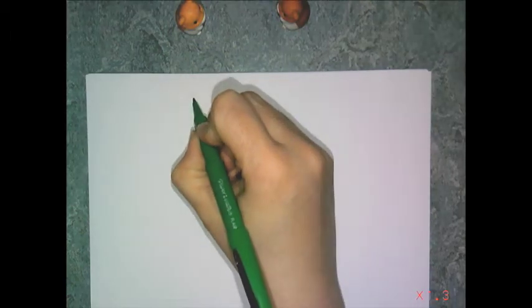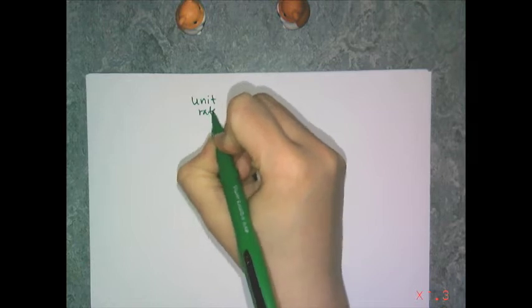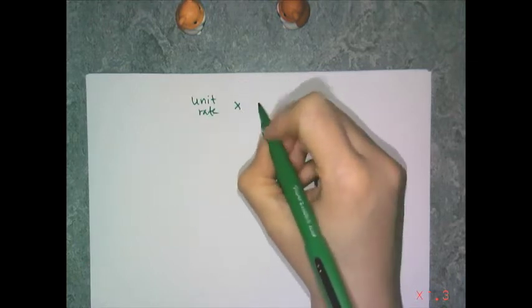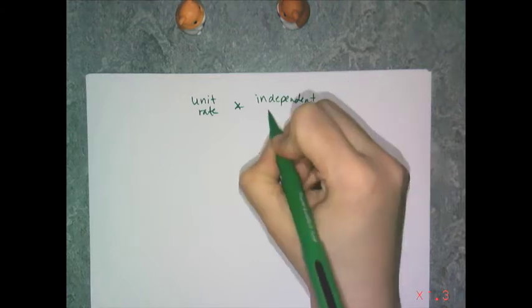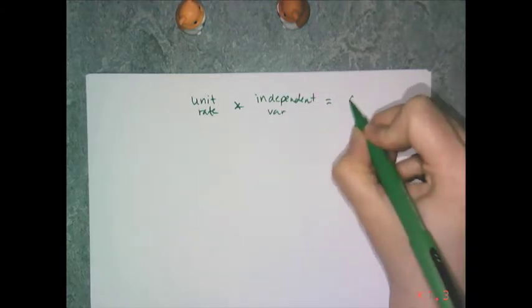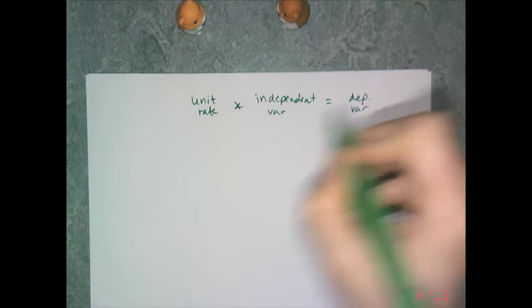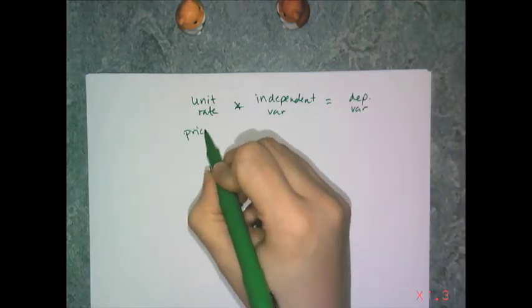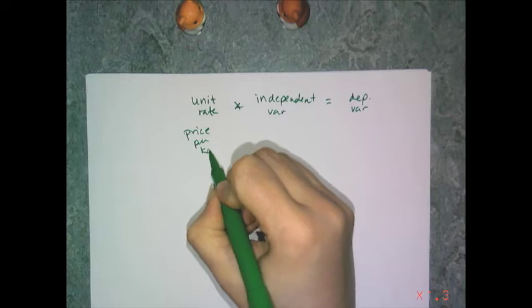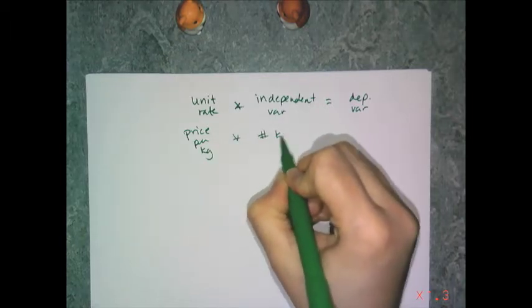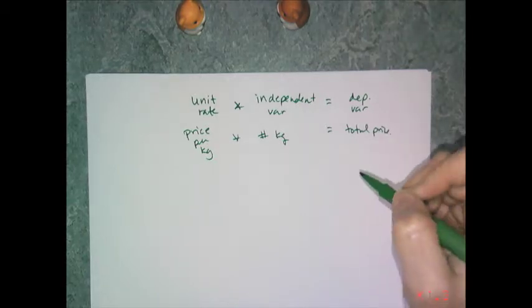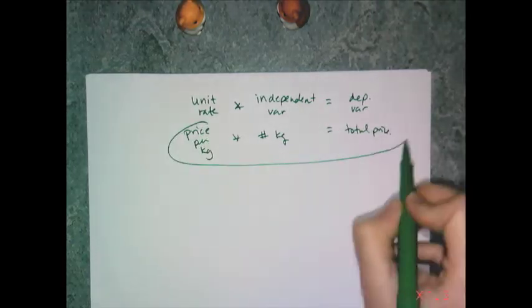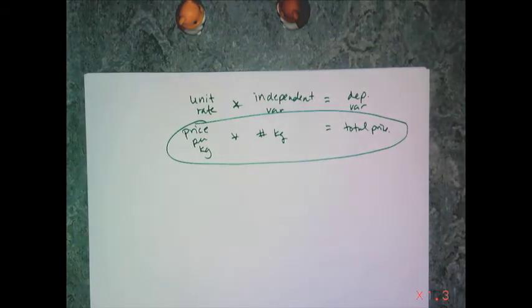This mixture problem has some kind of unit rate multiplied by some kind of independent variable, and it equals the dependent variable. In our case, it's price per kilogram times number of kilograms equals the total price. This is the fundamental equation that's dictating this word problem.